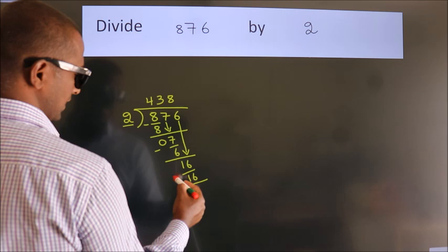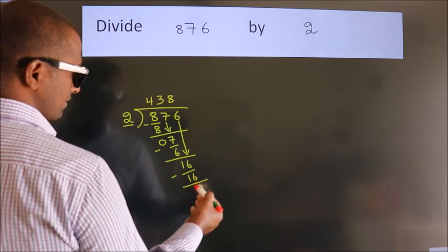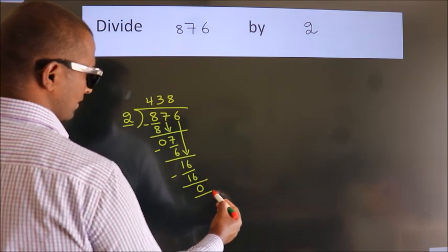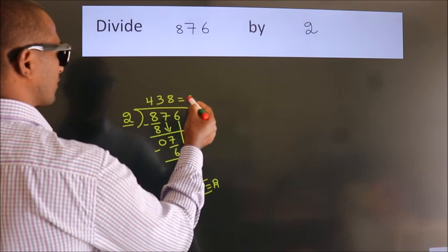Now we subtract. We get 0. After this, no more numbers to bring down. So we stop here. This is our remainder. This is our quotient.